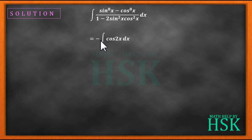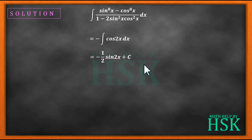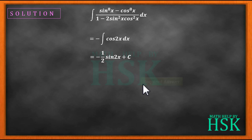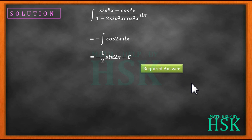We know that the integration of cos2x is sin2x/2, so the integration of -cos2x dx equals -sin2x/2 + C. This is the required answer.